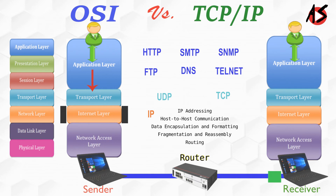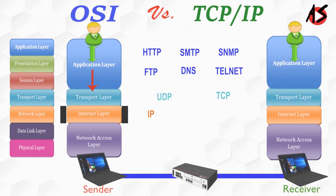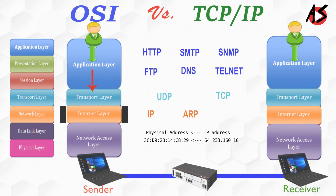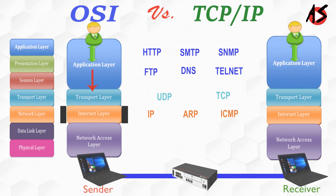Another protocol in this layer is Address Resolution Protocol (ARP), which is used to find a physical address from an IP address. ICMP, or Internet Control Message Protocol, is used to give information about any problems that occur during transmission back to the sender when a datagram is undeliverable.